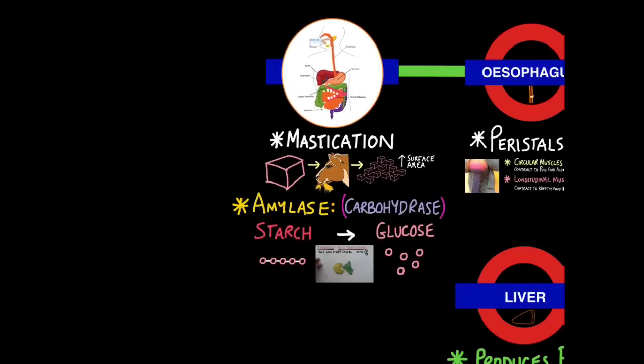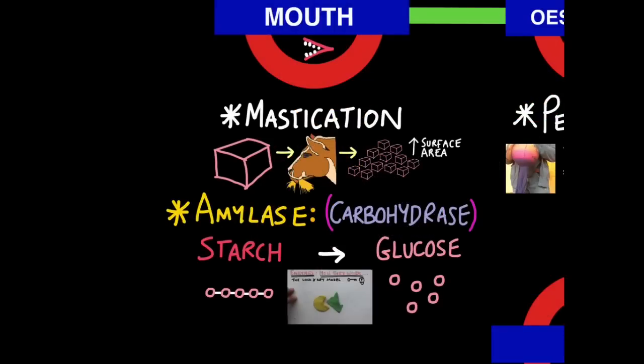So let's start with the mouth. So we're here with our digestive system. Two processes occur in the mouth. The first is mastication. This is a posh word for chewing. We chew food to break it down so the food has a larger surface area upon which chemicals can act. It's a bit like the body's pestle and mortar.